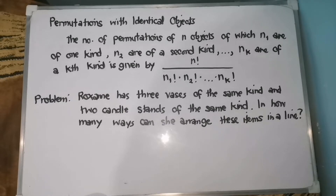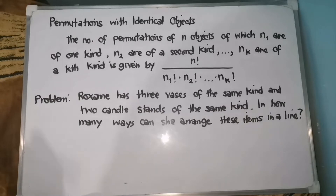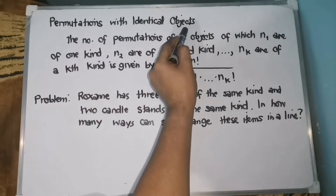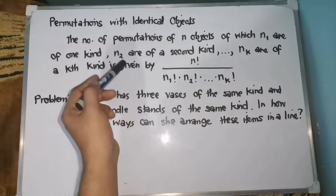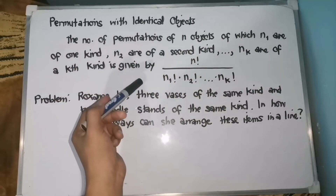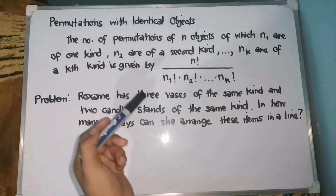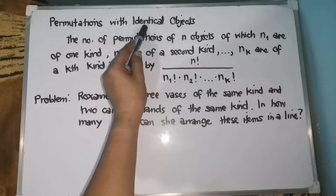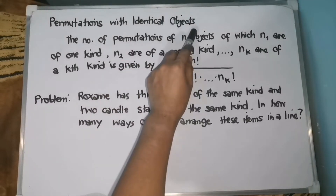For today's video, ay continuation ng playlist natin that is all about permutations, and another type of permutation is what we call permutations with identical objects. Again, take note that we are considering the order of an object, but by this time, ang given natin ay identical objects.